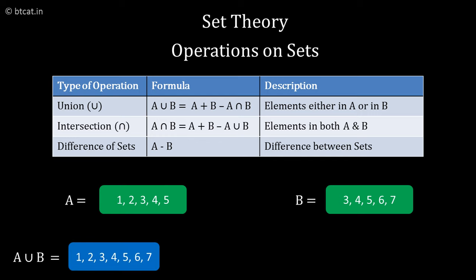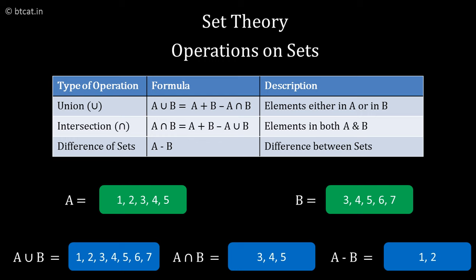A intersection B will be 3, 4, 5. And then there is one more thing which is difference: A minus B, difference of sets. A minus B is nothing but the number of elements which are present in A but not in B. In our example, the answer would become 1, 2, because 1, 2, 3, 4, 5 minus 3, 4, 5, 6, 7. 3, 4, 5 is present. What is not present in B is 1, 2.